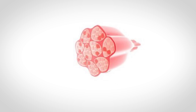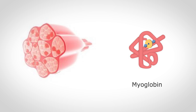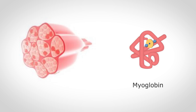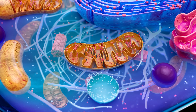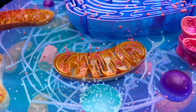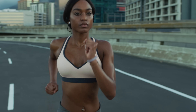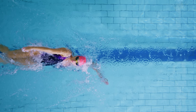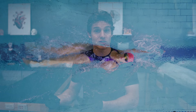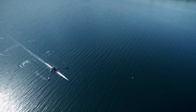The fast oxidative fibers have a lighter pink color from a lower myoglobin content compared to slow oxidative fibers, but still more myoglobin and a better oxygen supply than fast glycolytic fibers. They have a moderate number of mitochondria and glycogen stores, giving them an advantage for sustained but moderately intense endurance activities such as running or swimming. Even though they don't generate as much velocity and force as fast glycolytic fibers, they are more resistant to fatigue, making them ideal for activities requiring both endurance and a moderate level of speed.